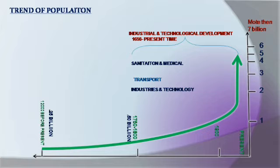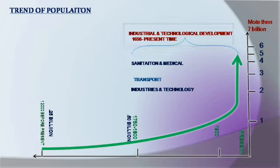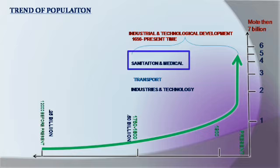After 1750–1800, we saw industrial and technological development. Because of this development, population growth became very strong. Key factors included improvements in sanitation and medical facilities, which caused the birth rate to increase and the death rate to decrease.